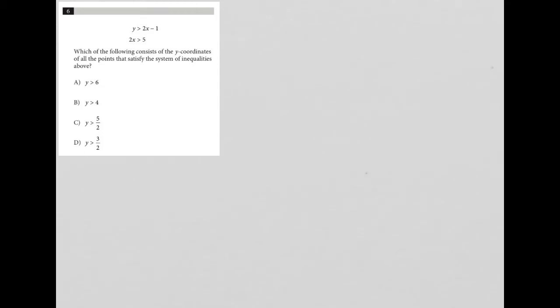This question gives us a system of inequalities: y is greater than 2x minus 1, and 2x is greater than 5. The question asks which of the following consists of the y-coordinates - that's important wording, I'll tell you why in a second - of all the points that satisfy the system of inequalities above.